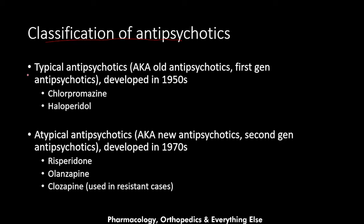Antipsychotics are classified into typical antipsychotics and atypical antipsychotics. Typical antipsychotics are also known as the old or first-generation antipsychotics, developed in the 1950s — an example is haloperidol. Atypical antipsychotics are the new or second-generation antipsychotics, developed in the 1970s — examples include risperidone, olanzapine, and clozapine, which is used in resistant cases.